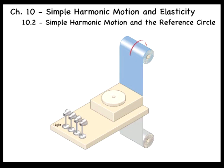A useful model can be used to explain these characteristics. Consider placing an object, a ball in this case, on a horizontal turntable. If we shine light from one side, a shadow of the object appears on the screen behind it. We now turn on the turntable so that it revolves at a constant rate, meaning that the ball undergoes uniform circular motion. Following the ball's shadow on the screen, the shadow undergoes simple harmonic motion.